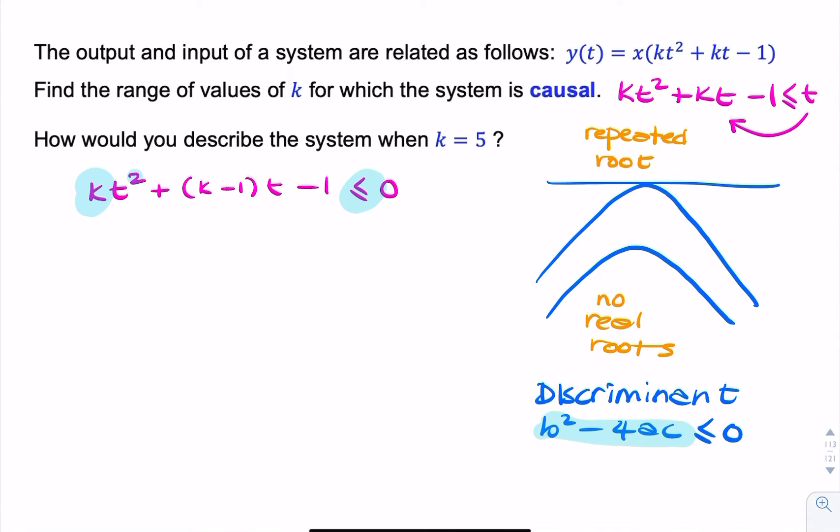This discriminant comes from a, b, and c, where this is my a, this is my b, and that is my c.